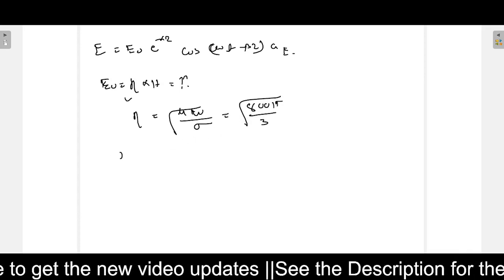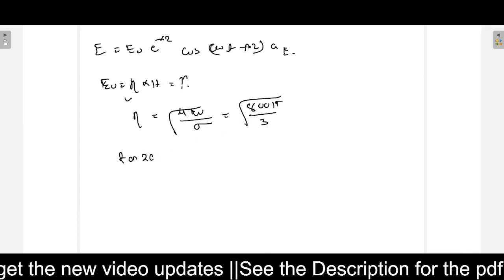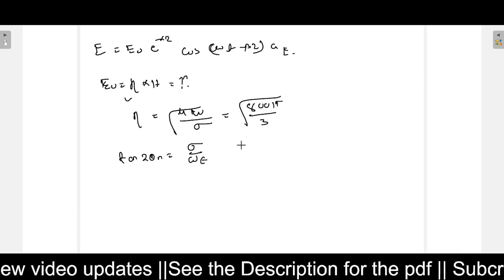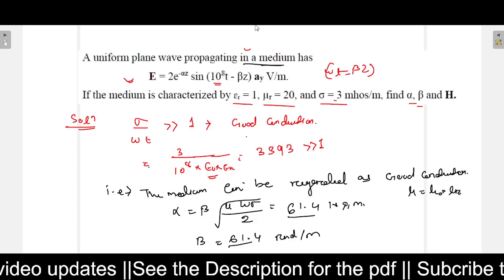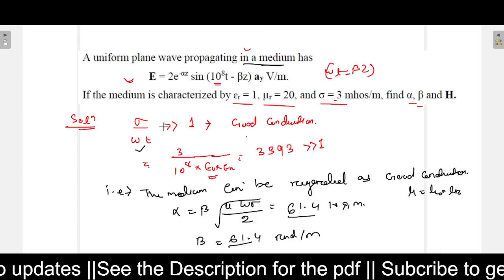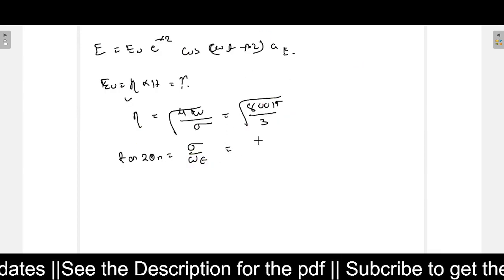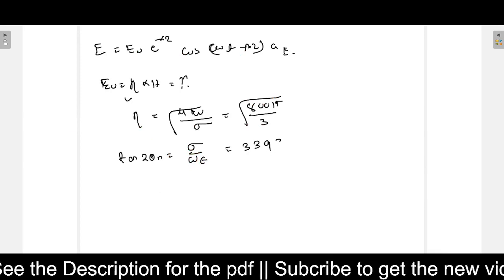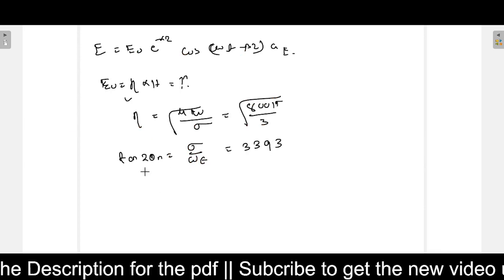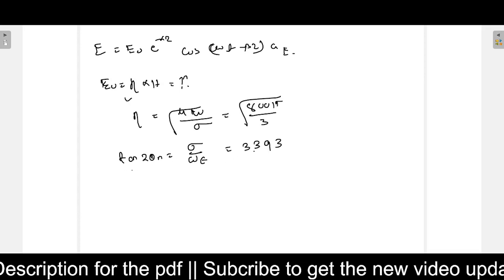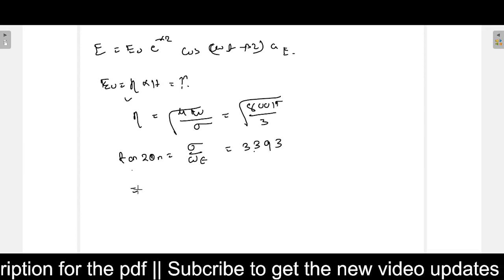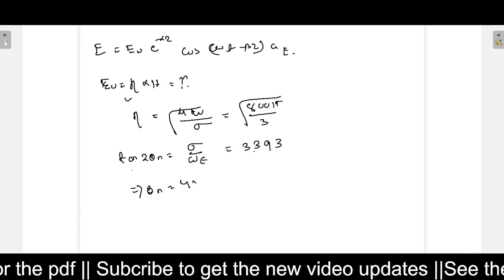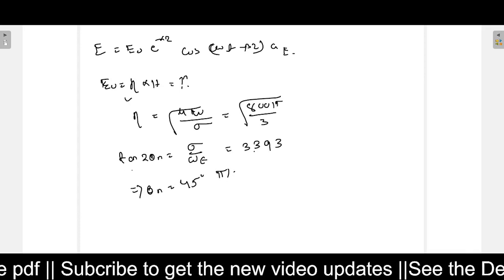Next, we need the phase also. tan(2*theta_n) equals sigma by omega*epsilon. We have calculated that initially. Sigma by omega*epsilon we have already calculated. That value is 3393. So tan(2*theta_n) equals 3393. That implies theta_n, taking the tan inverse, will be 45 degrees or pi by 4.